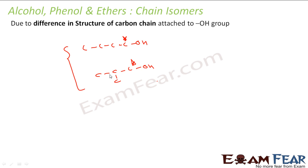This is the branched one, this is the straight. The structure of the carbon chain that is attached is different. It is a straight chain, it is a branch chain. They are called chain isomers.